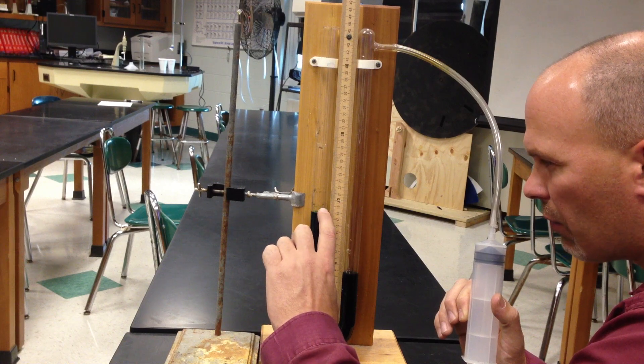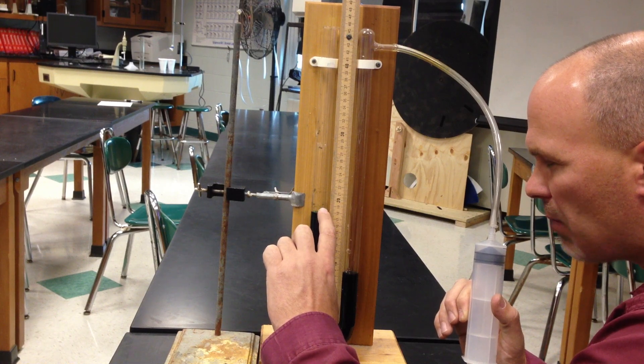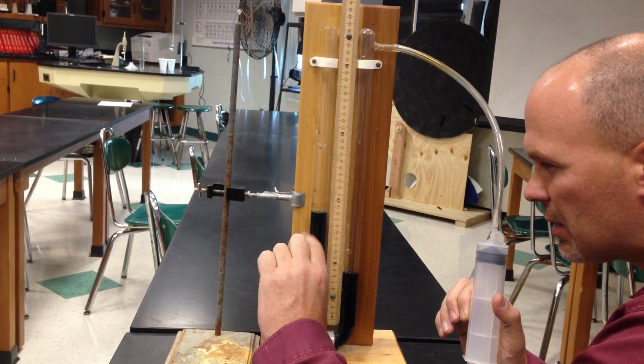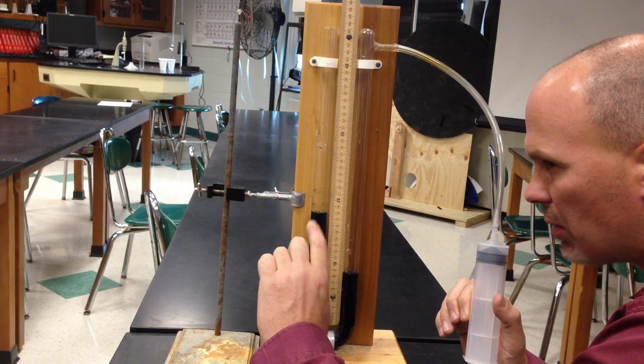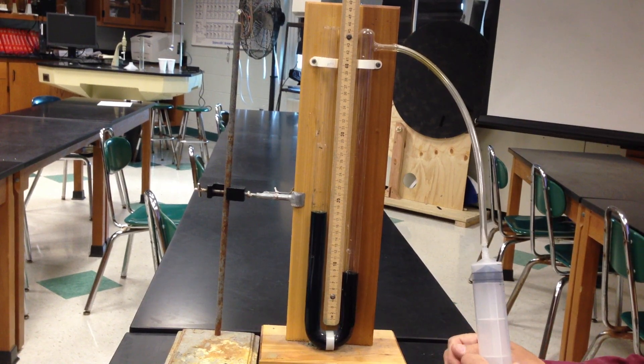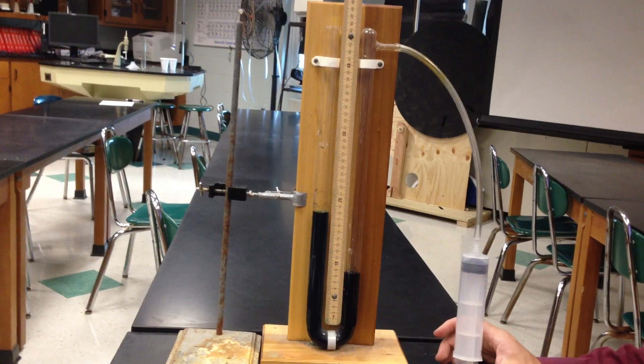If this was water and I'm going to convert it to mercury, I'd take my, if we're going to use 19, 190 millimeters, I'd divide it by 13.6, and that would be the height in mercury. So, if we don't have water, we can certainly get there by doing those differences. So, that's the little basics of manometers.